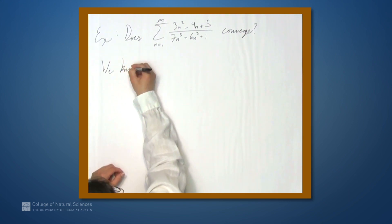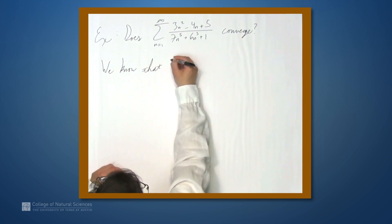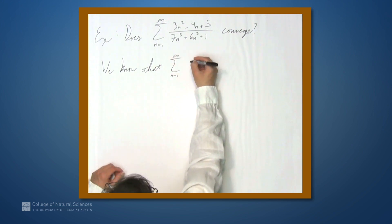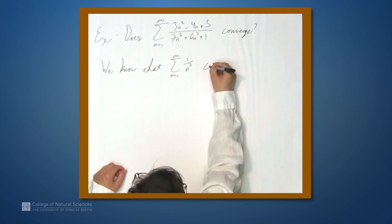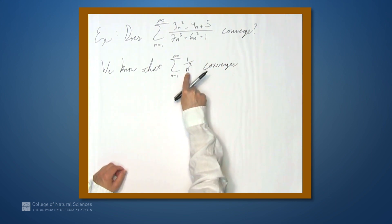And we know that the series n equals 1 to infinity, 1 over n cubed converges. This is a p series where p equals 3, so this converges.